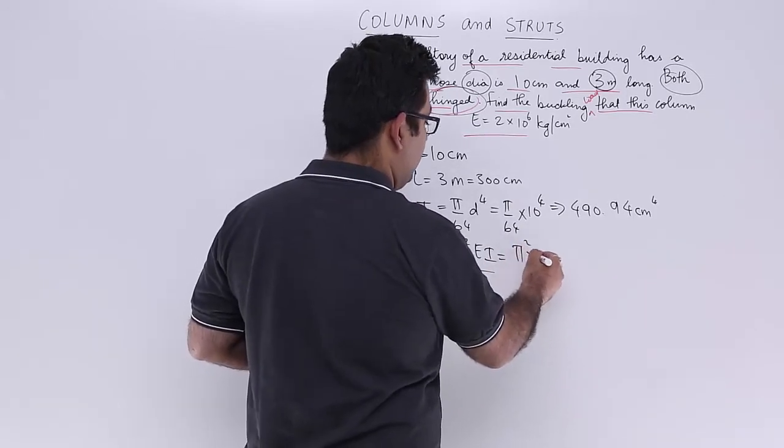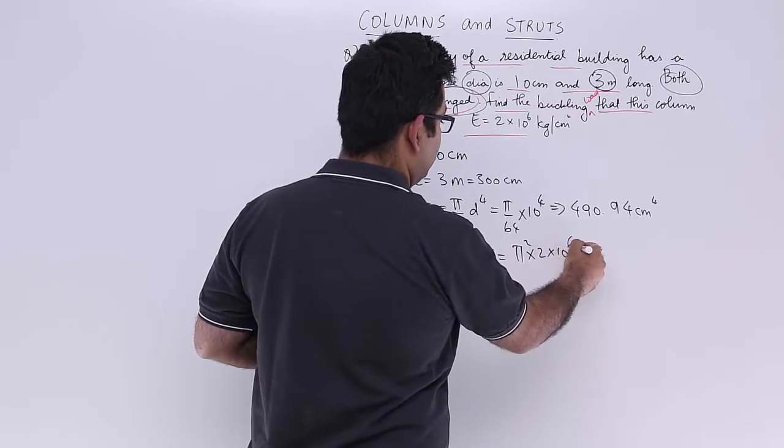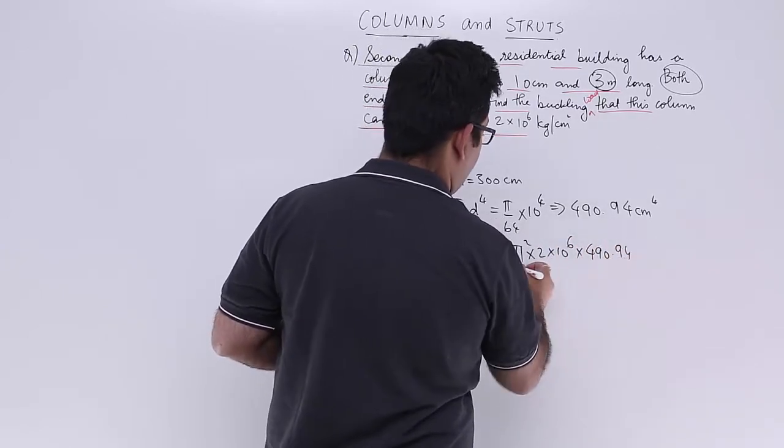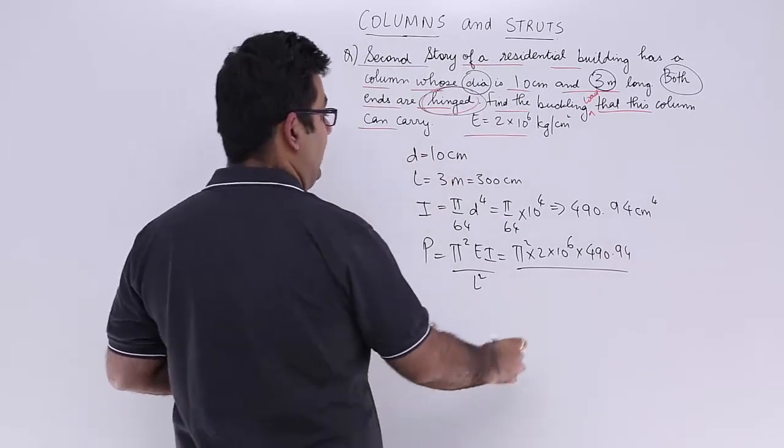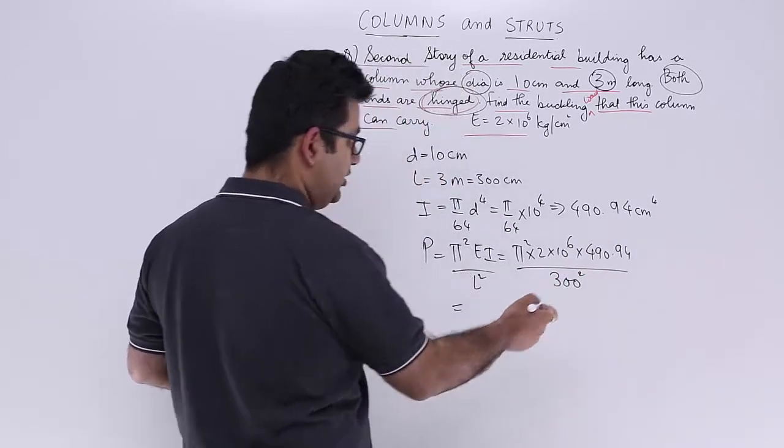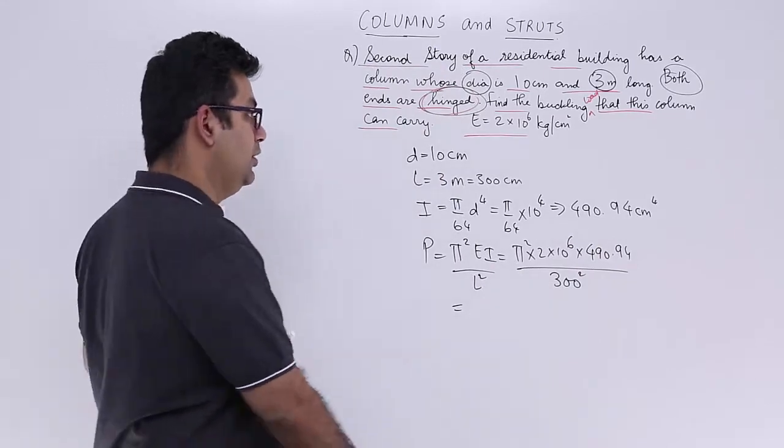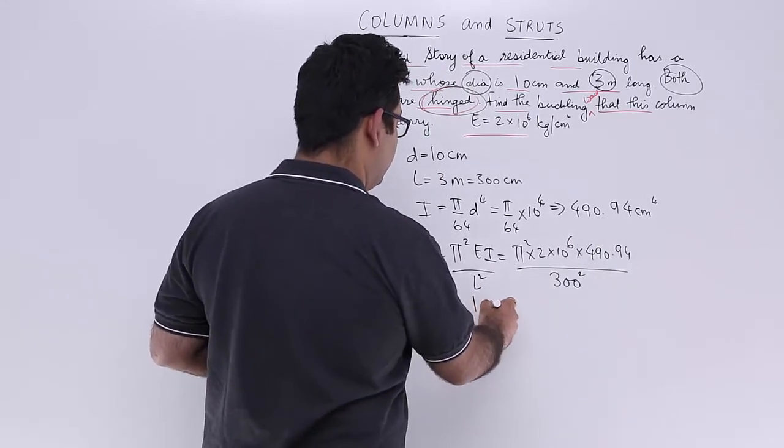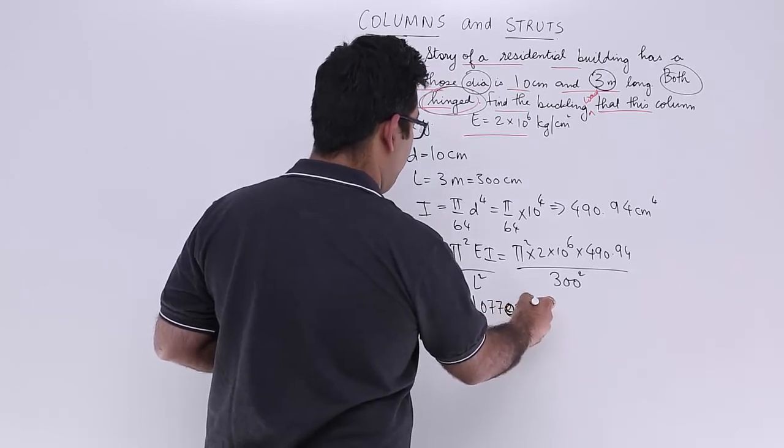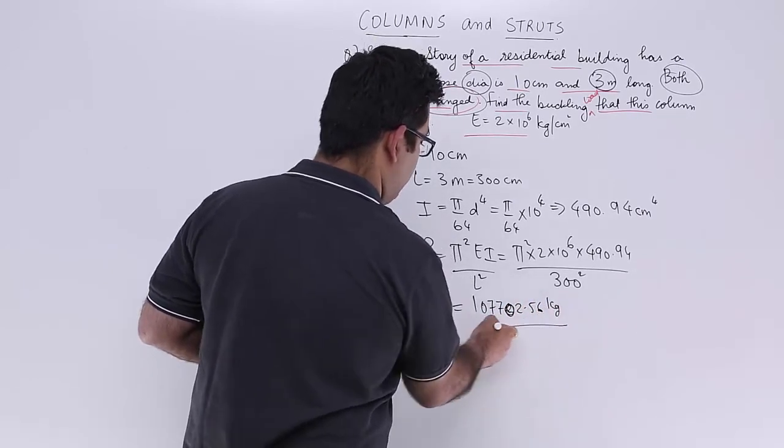π square, E is 2 into 10 to the power 6, moment of inertia 490.94 upon length 300 square. That's just the magic of your scientific calculator. It will be 1077202.56 kg.